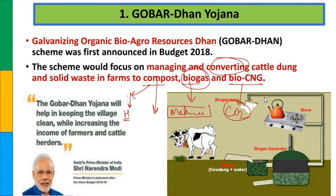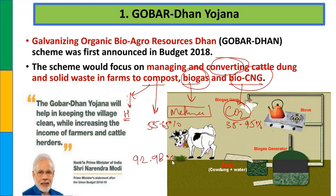Bio gas में methane लगभग 55 से 65% होता है और CO2 लगभग 35 से 45% तक होती है. Bio CNG एक purified form of bio gas है जिसमें methane का concentration बढ़ाकर 92 से 98% कर दिया जाता है - on an average 97%. मतलब more than 90% methane होती है और CO2 केवल 2-8% होती है, इसलिए bio CNG एक safer fuel है.